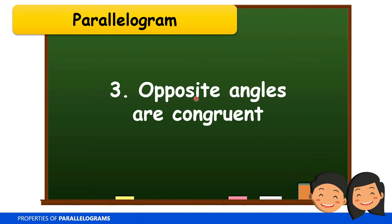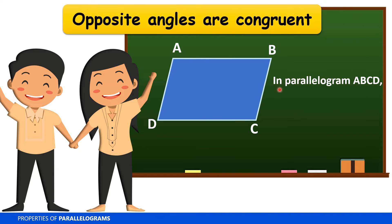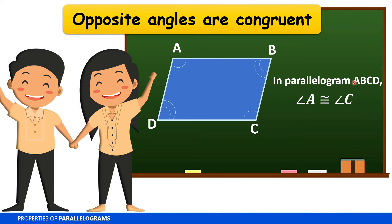The next property is that opposite angles in a parallelogram are congruent. In parallelogram ABCD, the opposite angles are angle A and angle C, and the other pair is angle D and angle B. Angle A is congruent to angle C, as shown by the tick marks. In symbol, angle A is congruent to angle C. Angle B is congruent to angle D because they are opposite angles.